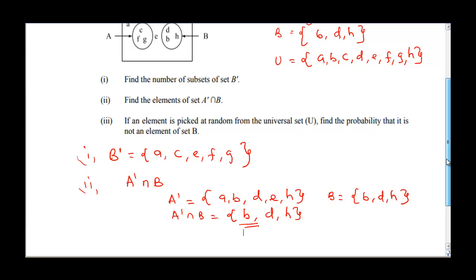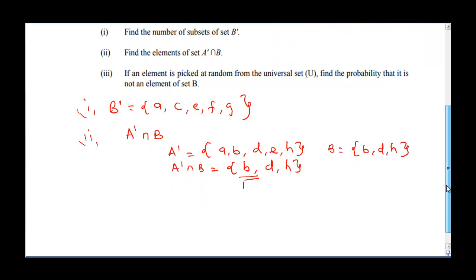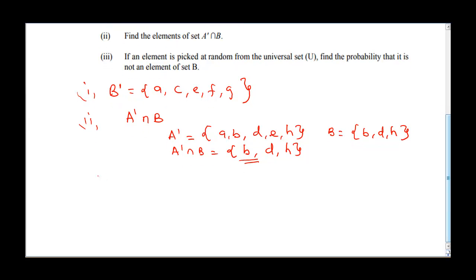Question C says: if an element is picked at random from the universal set, find the probability that it is not an element of set B. A probability question has been introduced into sets. To solve this, let's first identify the elements of B.